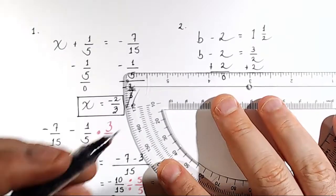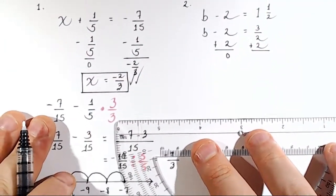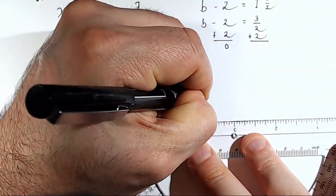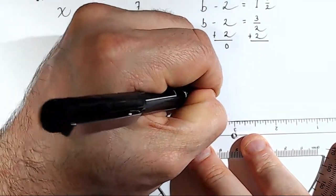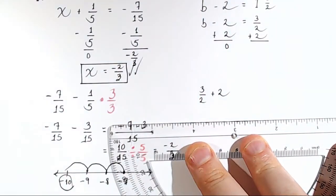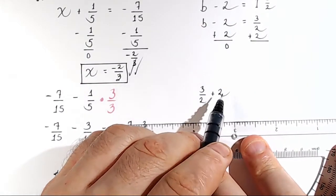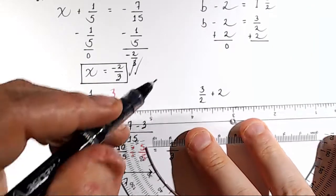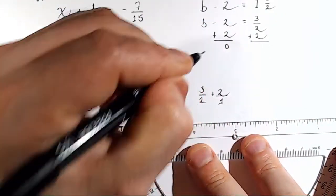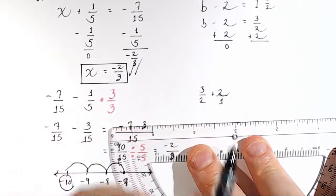On the left side, negative 2 plus 2 is 0. But again, we have a problem. On the right side, we can't just add. So we have to do a little side work down here. We have to do 3 halves plus 2. It's useful to remember that any whole number can be written as a fraction by putting that whole number over 1.